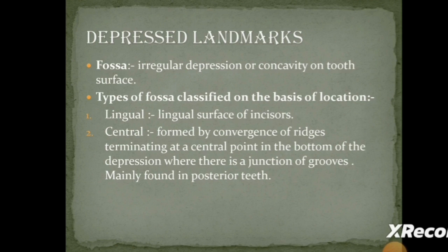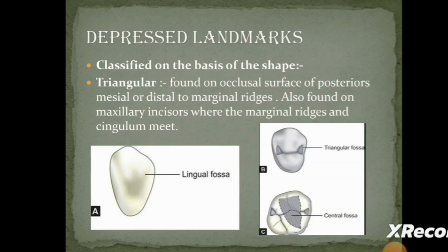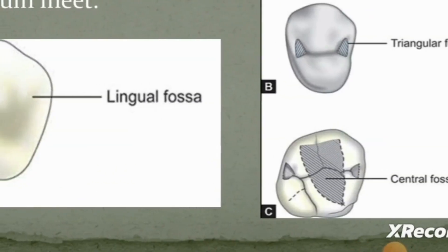There are different types of fossa on the basis of location: lingual and central. Lingual fossae are on the lingual surfaces of anteriors, mostly incisors. Central fossa is formed by the convergence of ridges terminating at a central point at the bottom of a depression, where there is a junction of grooves, mainly found in posterior teeth. In the image, there is a lingual fossa on the canine and a central irregular fossa where there is a junction of grooves.